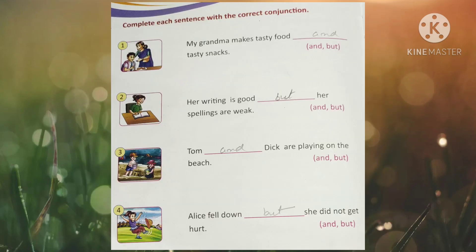Next exercise: complete each sentence with the correct conjunction. My grandma makes tasty food dash tasty snacks — 'and' is used to join the similar sentence. Next one: her writing is good dash her spelling are weak — to show opposite ideas or actions we use 'but'. Next one: Tom dash Dick are playing on the beach — 'and'. Next one: Alice fell down dash she did not get hurt — 'but'.